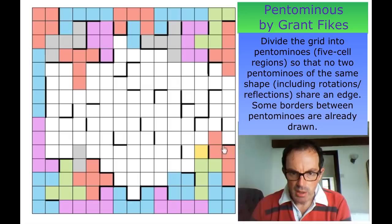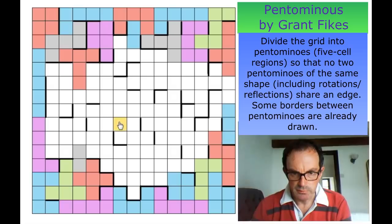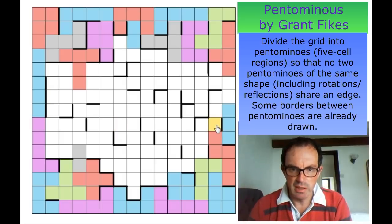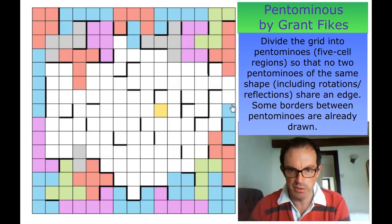I'm not sure — this one must come up to here. But this is not part of the light blue region, and this mustn't form another N pentomino because it would be sitting on top of another N pentomino.